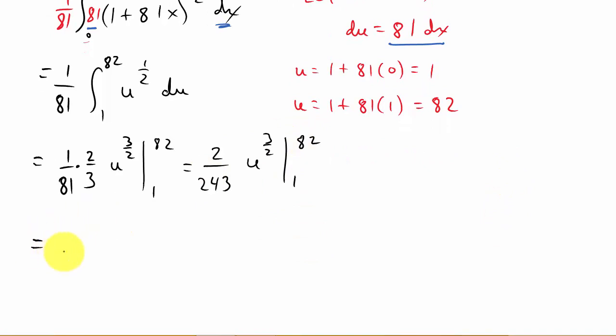Alright. So now we evaluate. So I get 2 over 243 times, and now I plug the 82 in. So that's going to be 82 to the 3 halves minus, and then I plug the 1 in, 1 to the 3 halves. And then when you punch all this into your calculator, you get 6.103. And that's your answer.